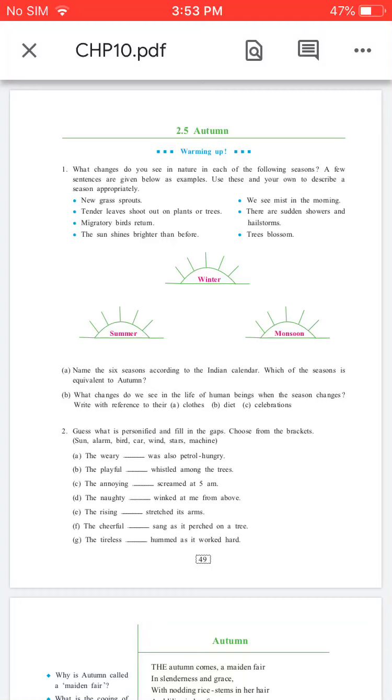We see mist in the morning. Dew drops. There are sudden showers and hailstorms. Trees blossom. Trees are all over.